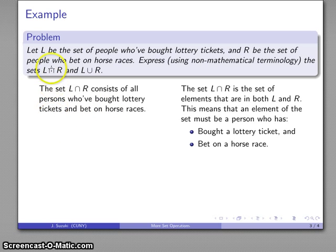If I've bought a lottery ticket, I'm in L. If I've bet on a horse race, I'm in R. If I've done both, I'm in L intersect R. And so there's my set L intersect R. Not a problem. Intersections tend to translate fairly easily between English and mathematics.